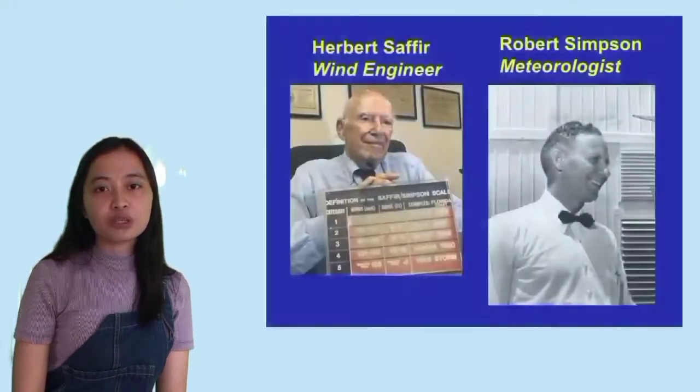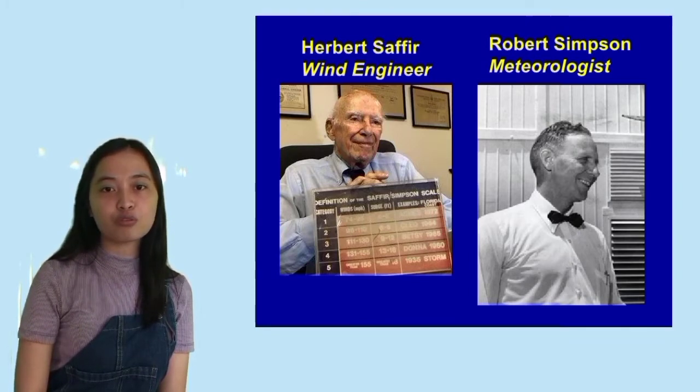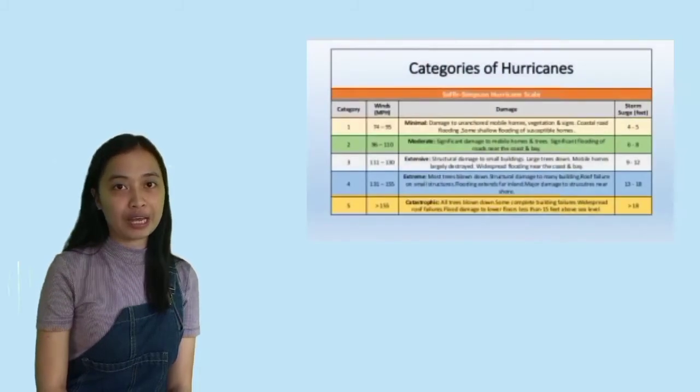Hurricanes are categorized based on their intensity, measured using the Saffir-Simpson Hurricane Scale. It is named after Herbert Saffir, a consulting engineer in Coral Gables, Florida, and Robert Simpson, director of the National Hurricane Center. The Saffir-Simpson Scale rates hurricanes by their potential for damage on a scale of one to five.